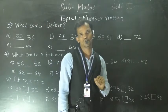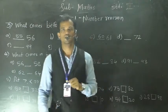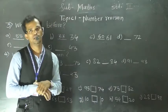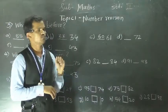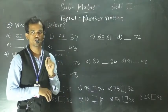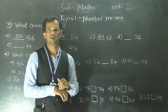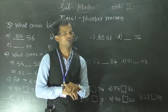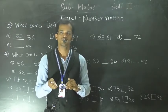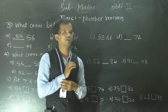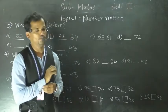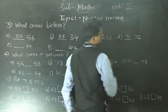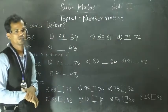Next: 72 — number is given and we have to write the before number of 72. See: 71, 72. So 71 is the before number of 72 because it comes just before 72 in the number series. So 71 is the before number of 72.